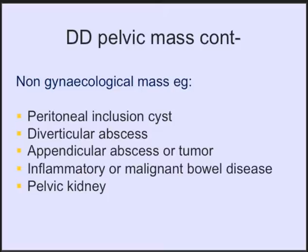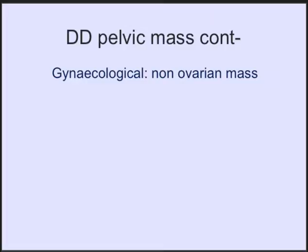Going to the non-gynecological differential diagnosis: a peritoneal inclusion cyst is an option, diverticular abscess, appendicular abscess or tumor, inflammatory bowel disease, and even sometimes a pelvic kidney or pelvic cyst. Usually you will find pointers when you take a thorough history.